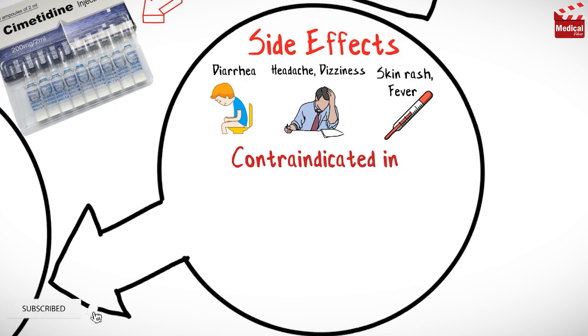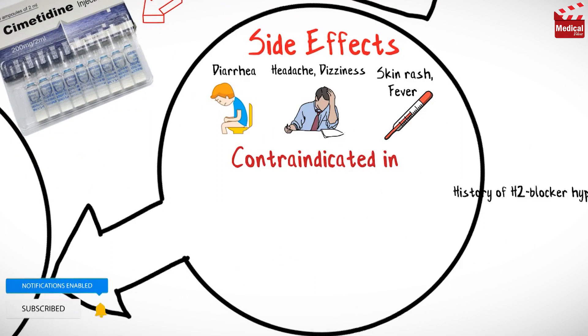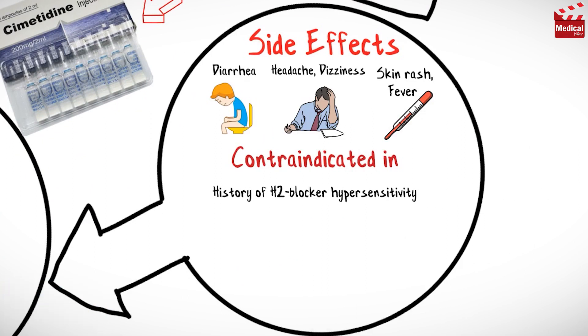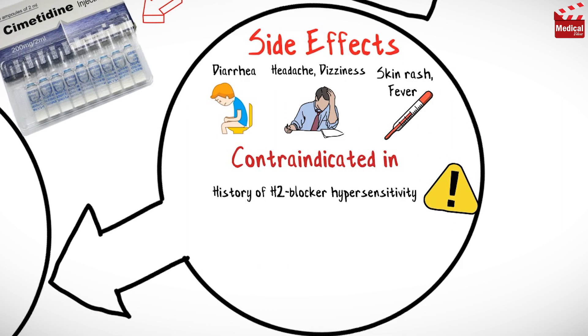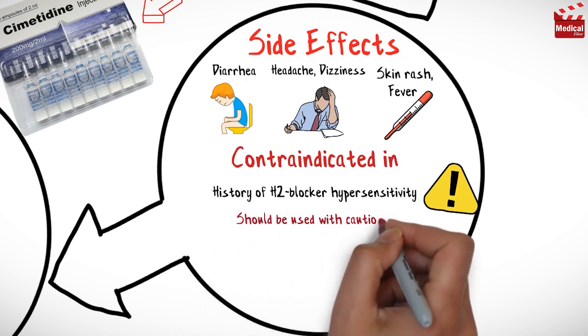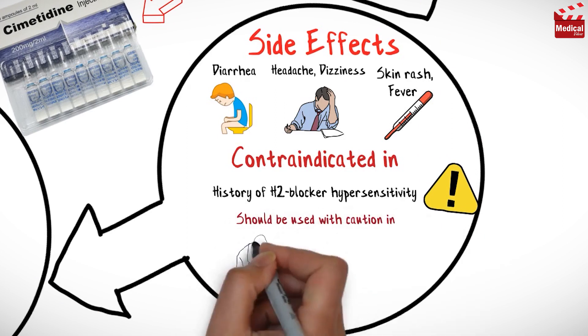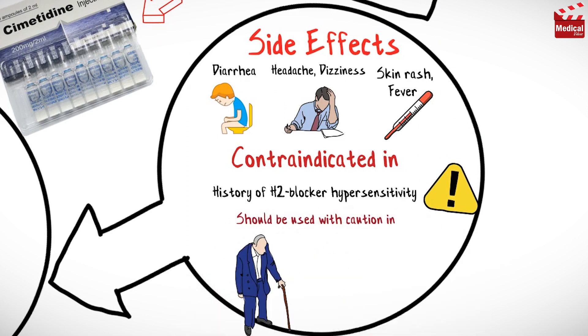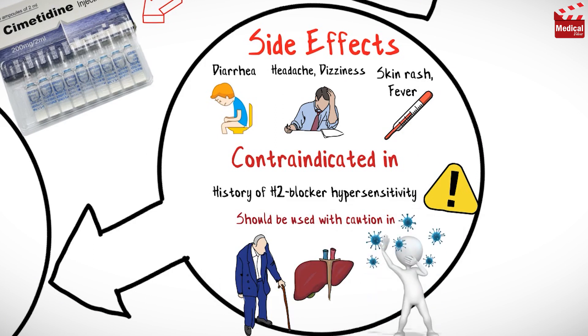Cimetidine is contraindicated in patients with a history of H2 blocker hypersensitivity. It should be used with caution in elderly patients, those with hepatic disease, and immunocompromised patients.